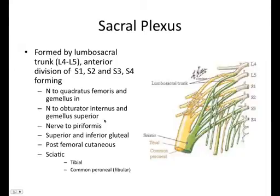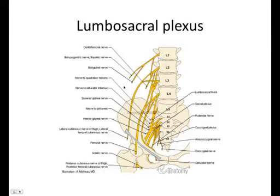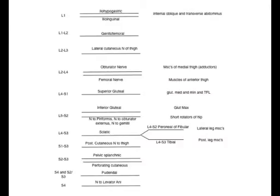A lot of the sacral plexus is innervating your gluteal area, except for the sciatic which then goes down into your leg. You combine those two plexuses into what is actually the lumbosacral plexus. Don't memorize the complex image — this is not what I want you to memorize. I just want you to understand that it is actually two plexuses combined, the lumbar and the sacral. This simplified chart tells you exactly what is formed from what nerve roots.